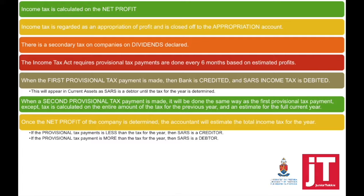During the accounting period, provisional tax payments need to be made every six months. When this happens, your bank account is going to be credited and the account debited is SARS income tax. So we pay them upfront. At the end of the accounting period, we will calculate what our income tax is supposed to be, and compare that with the provisional tax payments to see if we still owe SARS or SARS owes us.